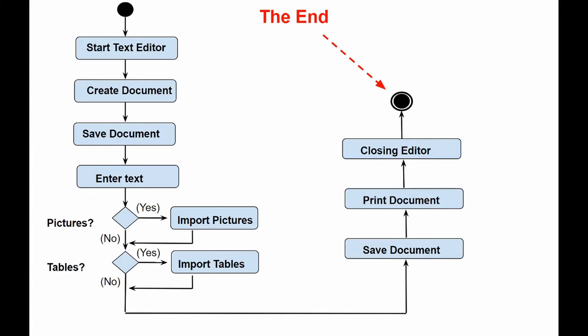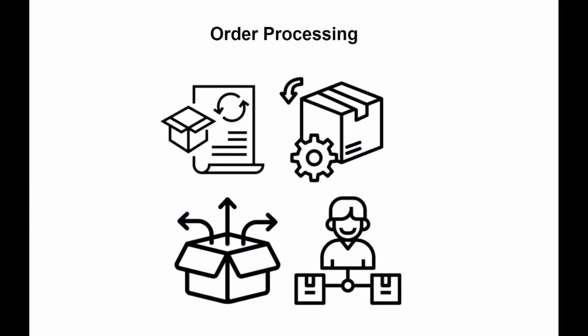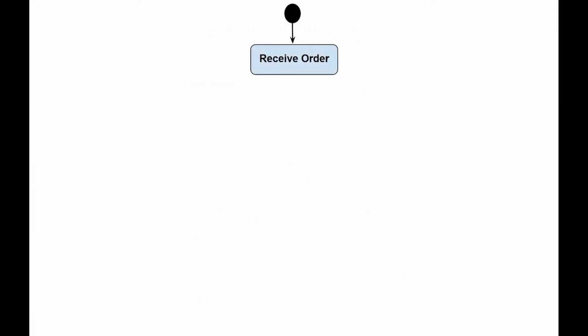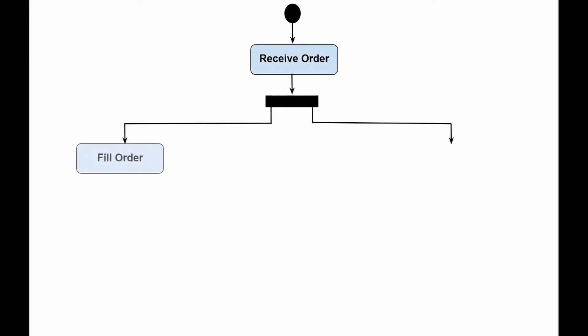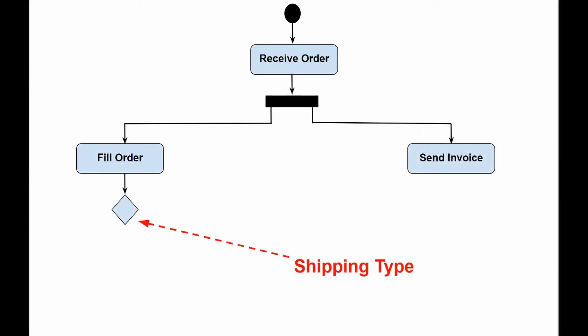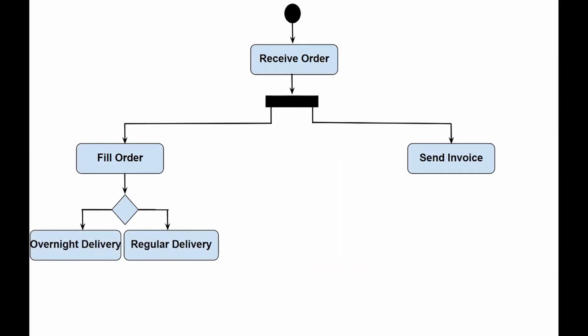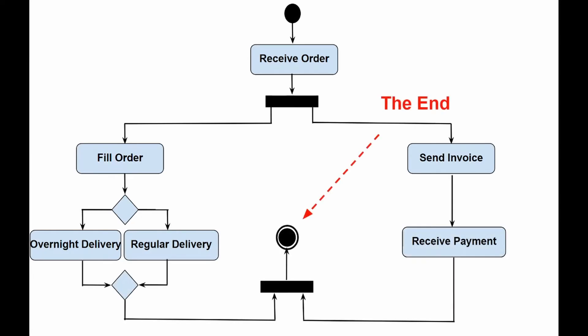Now let's imagine that we were given a task to simulate the order processing workflow using an activity diagram. Once the order is received, the activities split into two parallel flows: one fulfills and sends the order, and the other processes the invoices. On the order processing side, the delivery method is determined depending on the conditions of the order — overnight delivery or regular delivery. After sending the invoice for the goods, the payment process side is going to receive payment. Finally, the two parallel flows join and finalize the order processing.